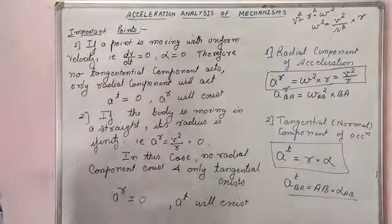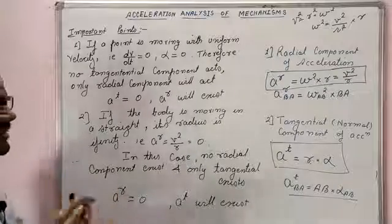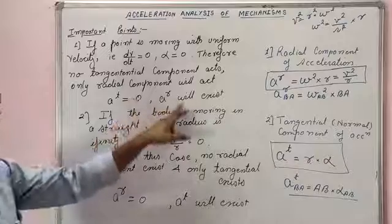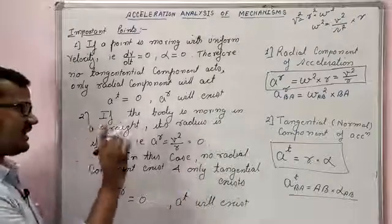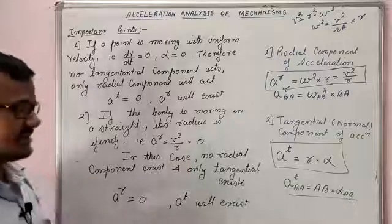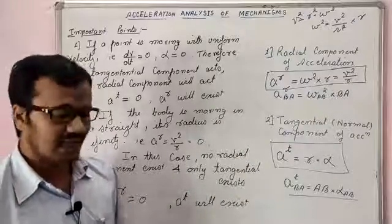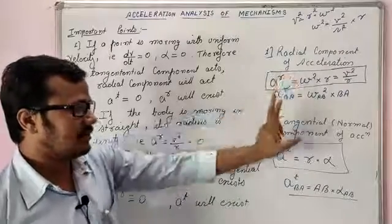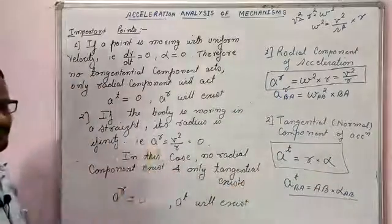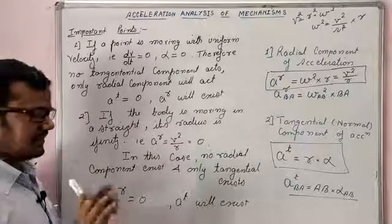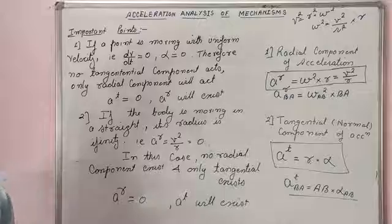To summarize: the radial component is always parallel to the link, the tangential component is always parallel to the velocity. If uniform velocity, tangential component is zero; if straight-line motion, radial component is zero. The total acceleration of any particle is the sum of the radial component and the tangential component. Tomorrow we will solve a basic question on these concepts. Thank you.